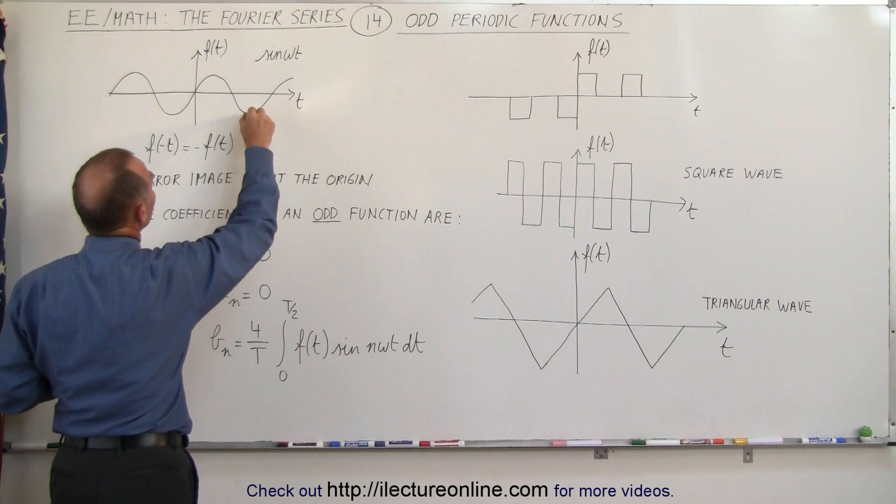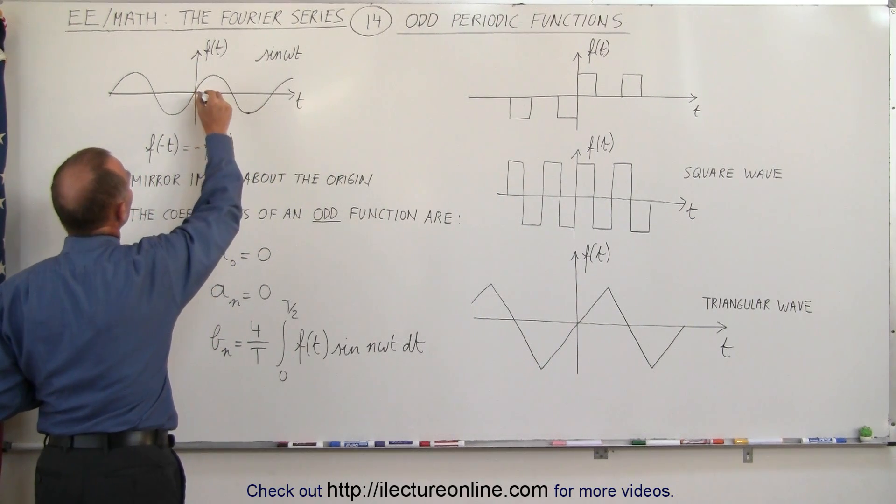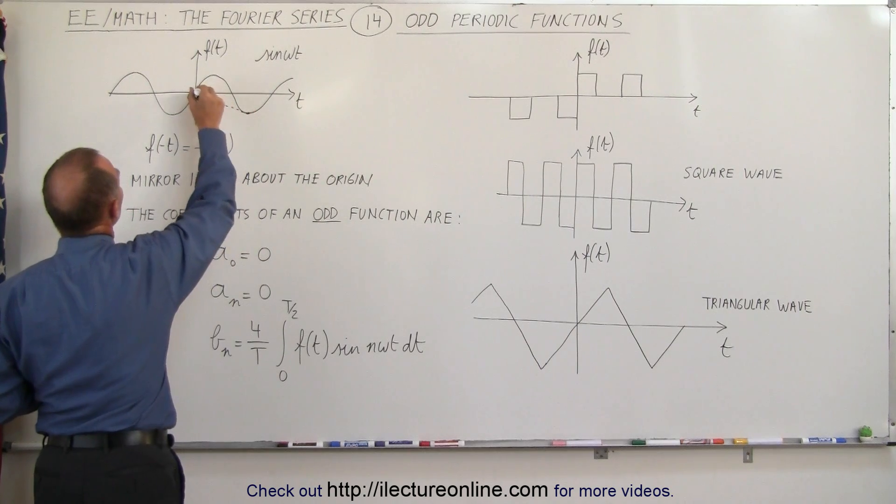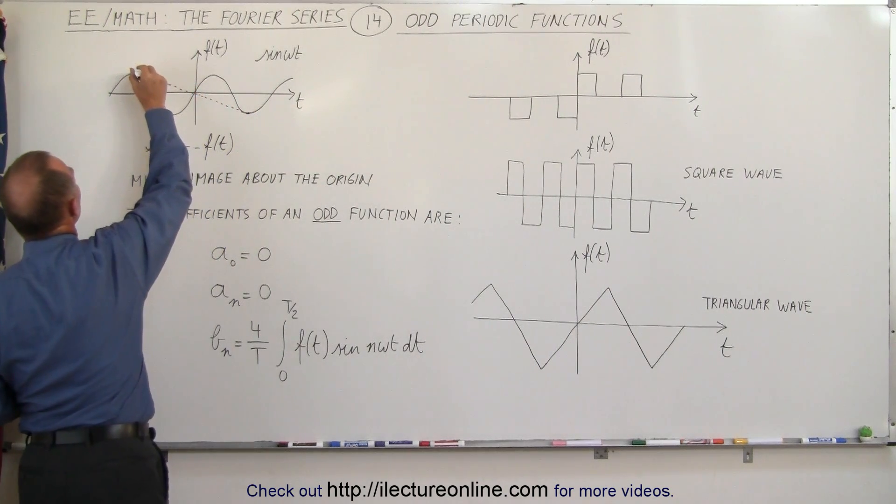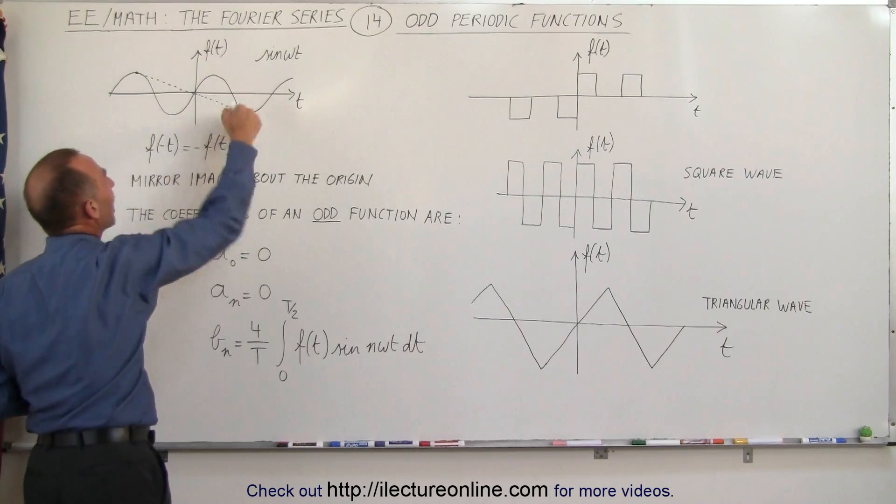If you pick a point like right here in the function and you draw a line from here to the origin and then you continue that line on the other side, notice it will come to a point where the mirror image exists about the origin.